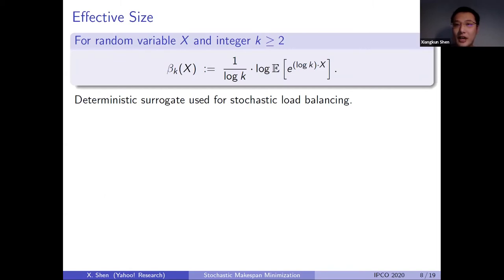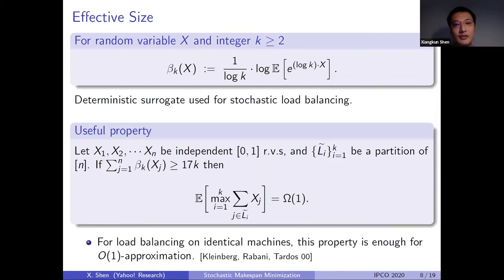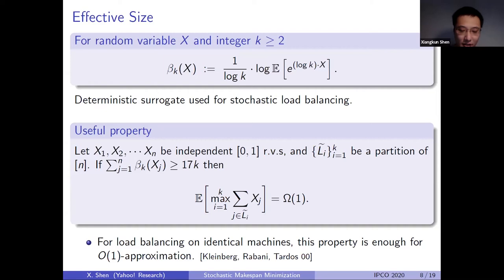This is the definition of effective size. It is basically a weighted order of the log moment generating function, defined for a random variable x with integer parameter k. The k appears both as the weight and as a normalization factor. Intuitively, if we can control the effective size in some way, it can lead to a bounded expected mixed span. For the load balancing problem on identical machines, this property alone is enough for a constant approximation. The main difference here is that in load balancing each job loads only one machine, but in the interval selection setting each interval can load multiple points, so we need a more sophisticated approach.